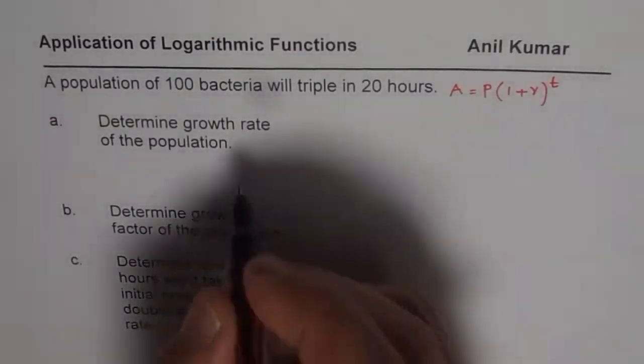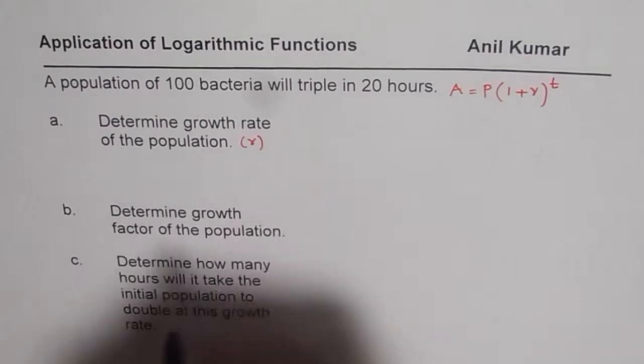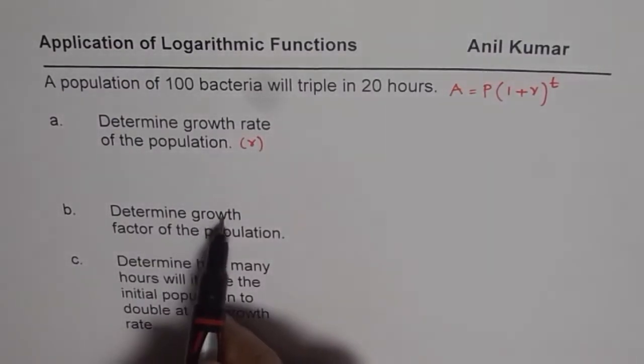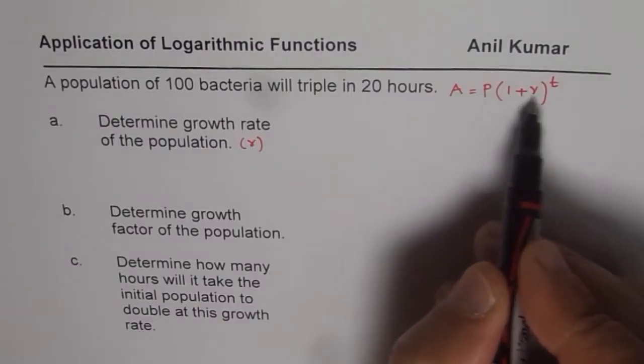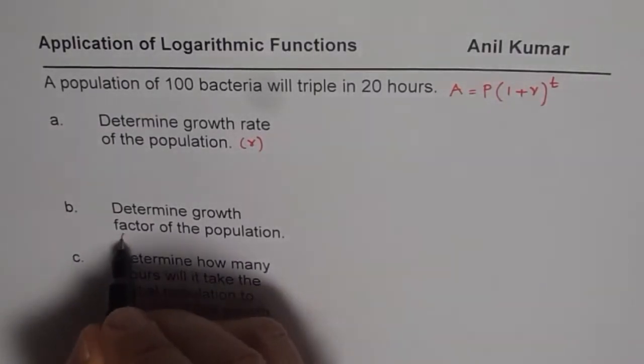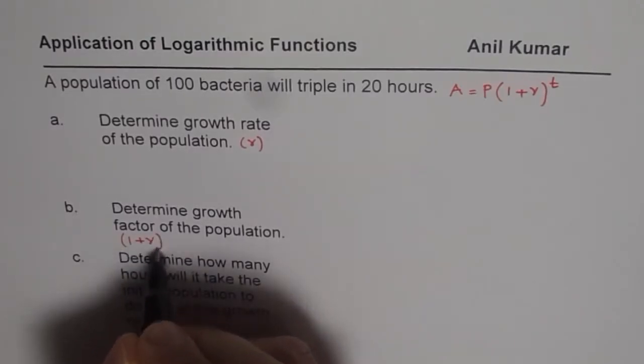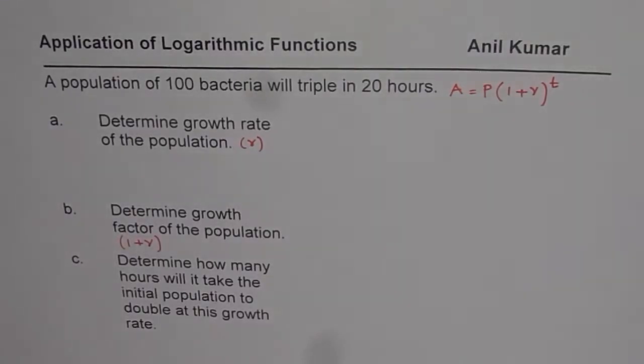So when we say growth rate, we have to find the value of r. And when we say growth factor, then the whole initial population is being multiplied by 1 plus r, so here we need to find 1 plus r. This is the difference between part a and b, which I think is important to understand.